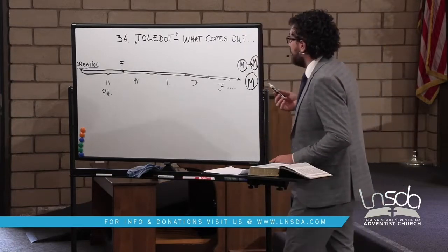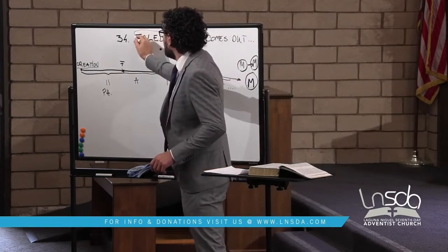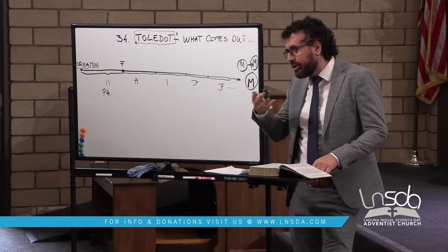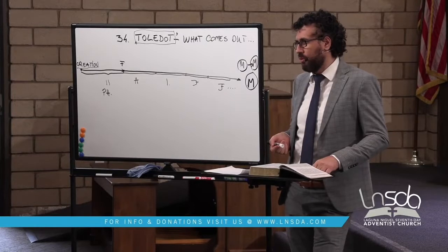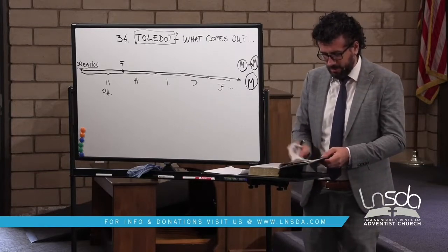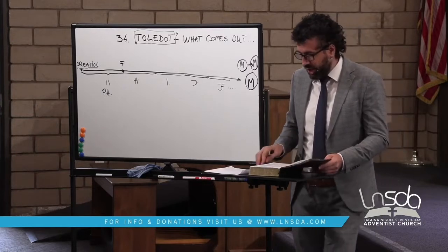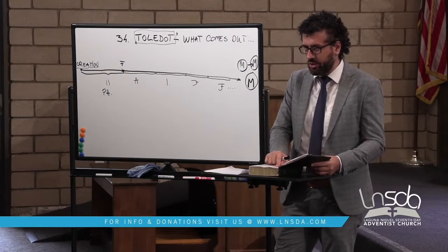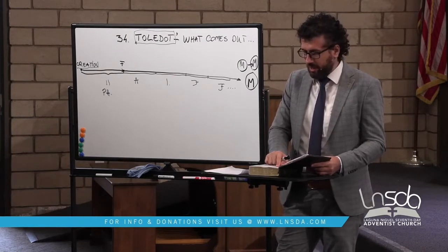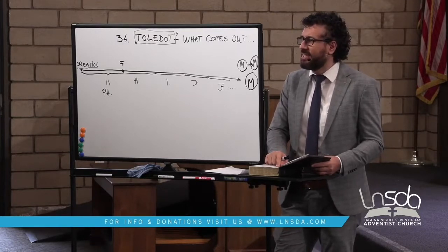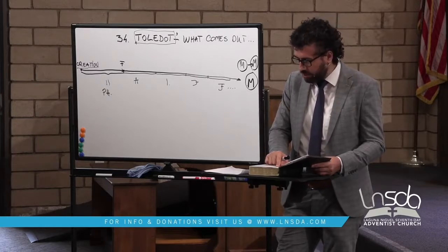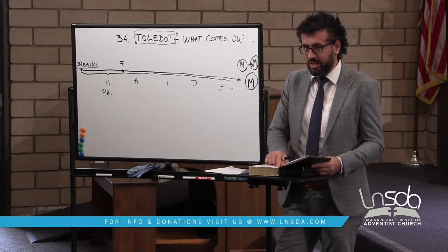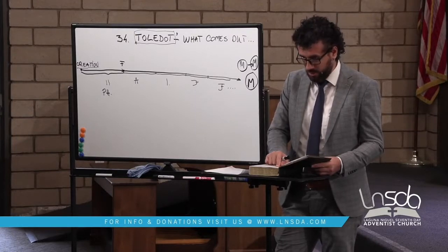There is a word in the book of Genesis that appears a number of times — a Hebrew word, Toledot. The first moment that word appears is Genesis chapter 2, verse 4. My translation says 'this is the history' — please check your translation, because you can find the word Toledot translated in different ways: history, account, descendants, or generations. The NIV uses 'account.'